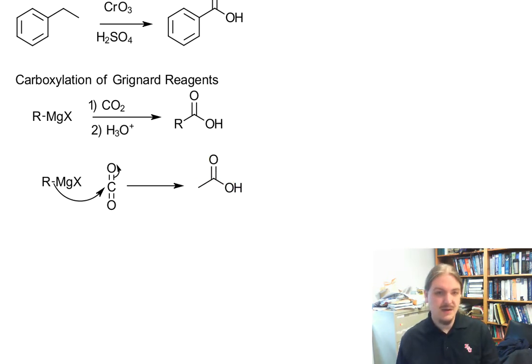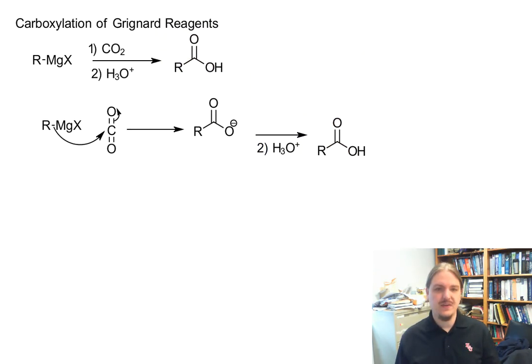One of the carbon oxygen double bonds breaks, the other one stays together. Now we have a carboxylate anion. The carboxylate anion is not reactive further under these conditions. And so when you protonate it using aqueous acid, you generate the carboxylic acid. That's cool.